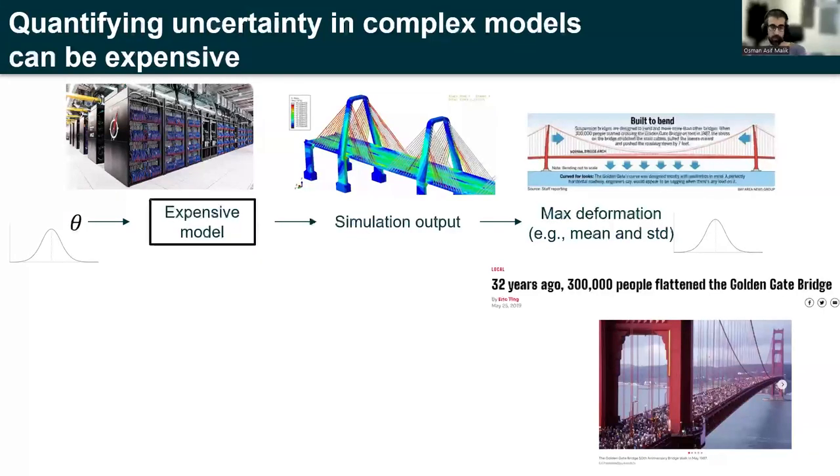Consequently, we're interested to then understand what is the distribution of the max deformation in this case. Or a simple question would be to ask, what is the mean and the standard deviation of the maximum deformation that this bridge is going to experience, given the distributions that we have on the input variables?